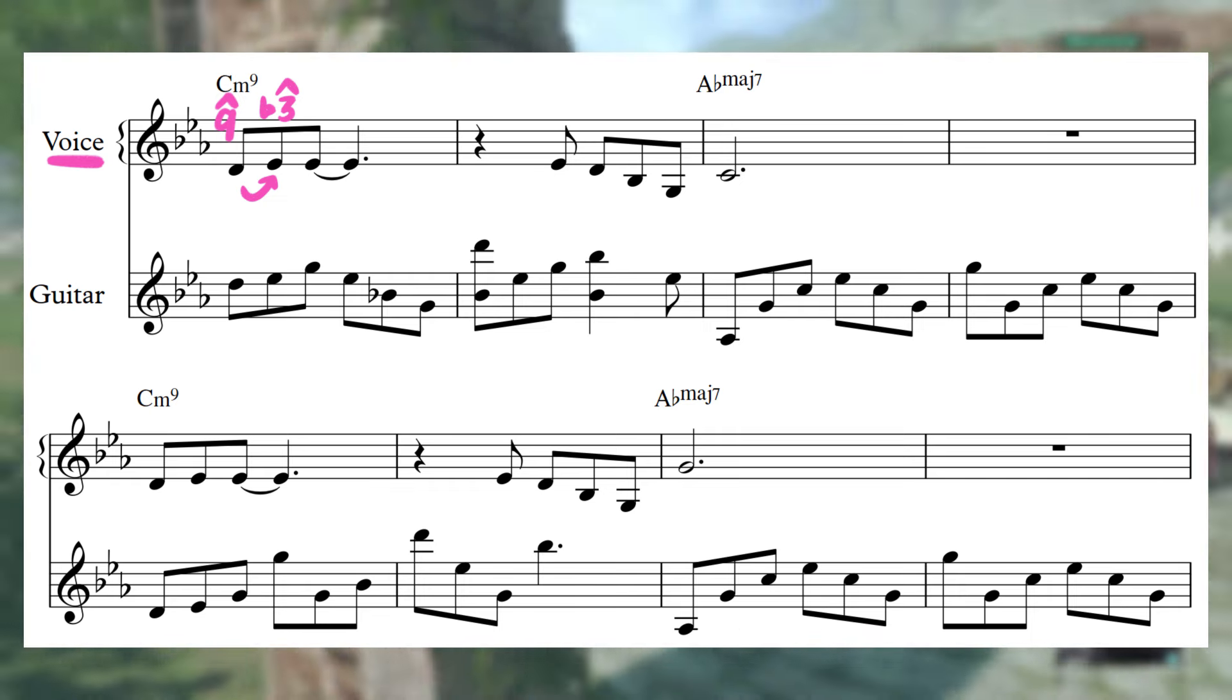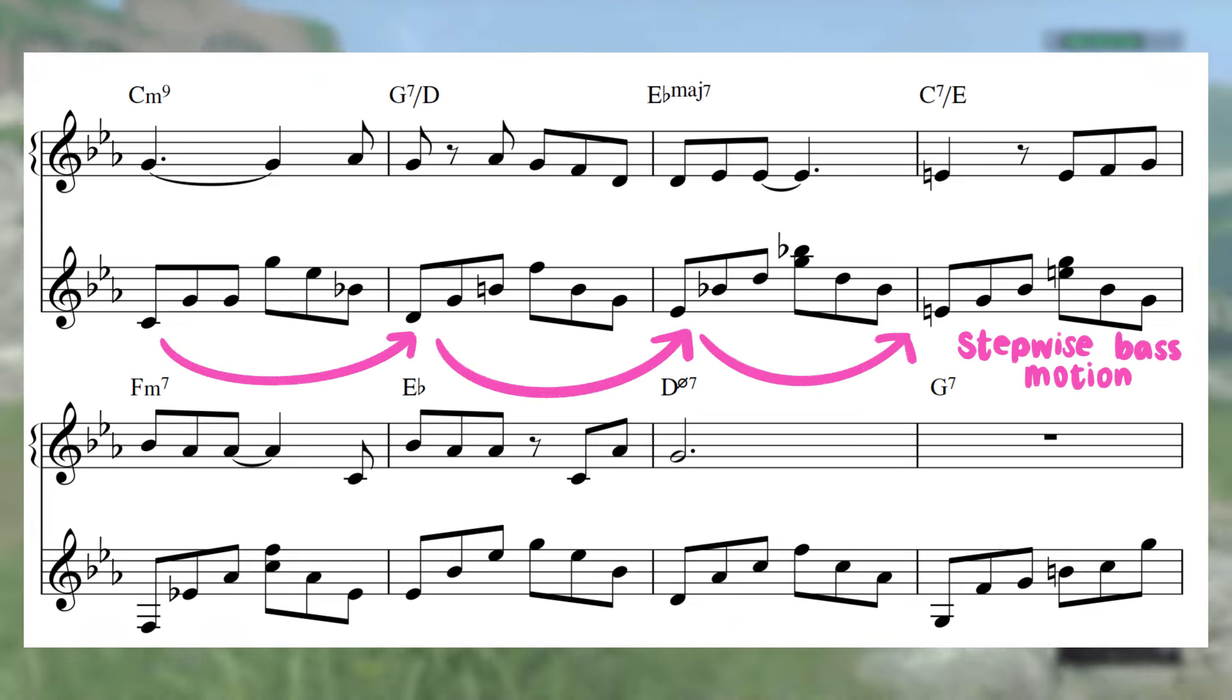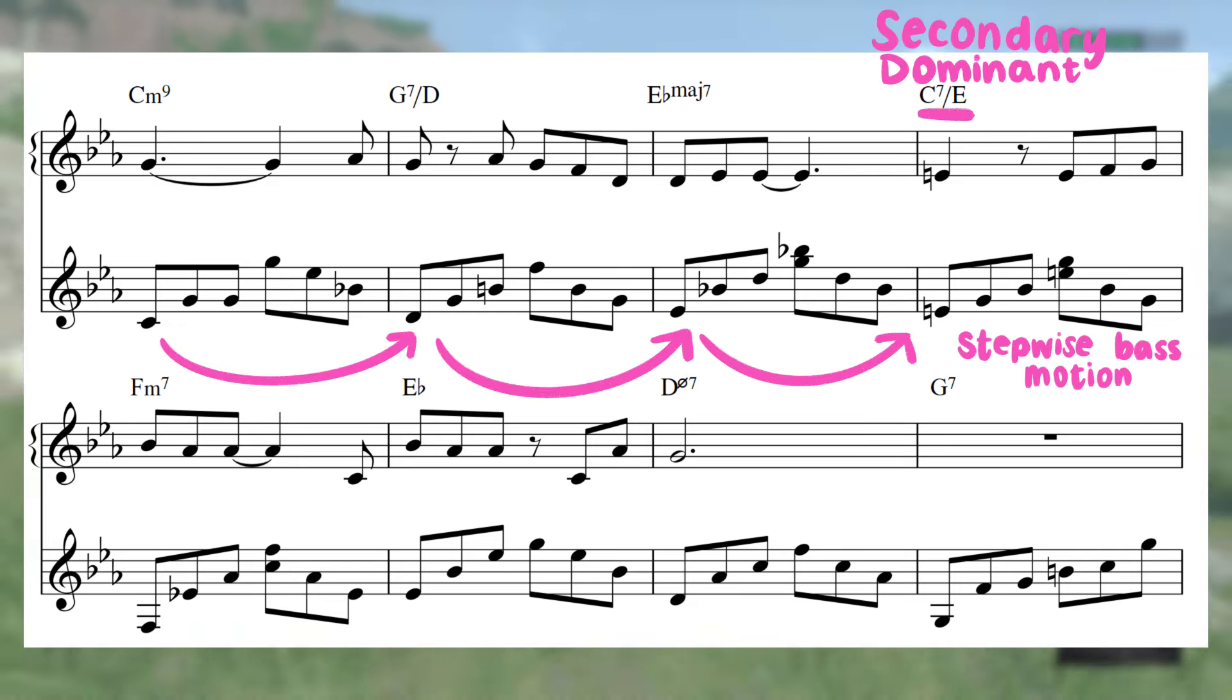And harmony that starts out super soft with this repeating C minor to A flat major 7 vamp, before kicking into classical mode on the bridge with this stepwise bass walk up to a secondary dominant resolution to the IV chord F minor.